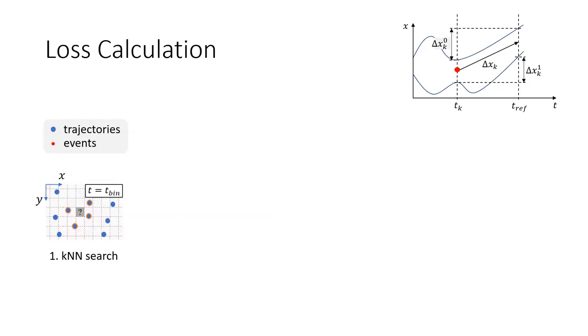Let's take a closer look on the loss calculation. The k-and-n search is performed independently for several time bins. You see here a visualization of one time slice. For each entry of the lookup table, shown by the dotted grid, we find the k-closest trajectories. Now the displacement is interpolated from these trajectories.